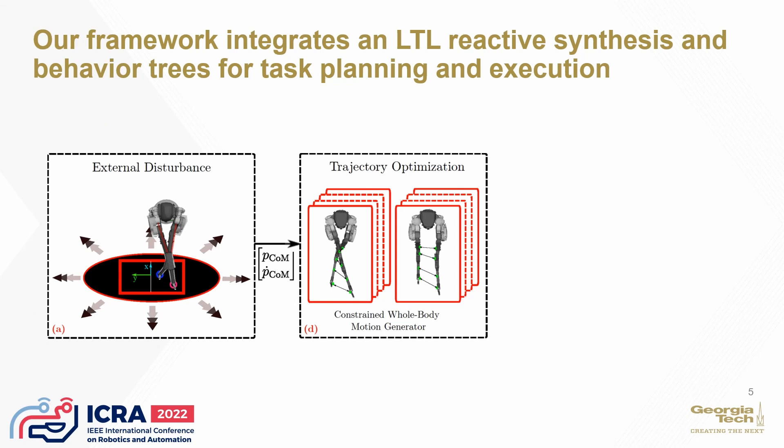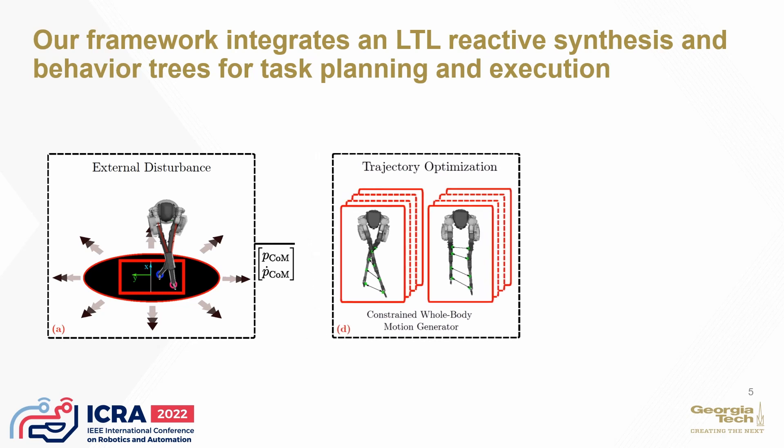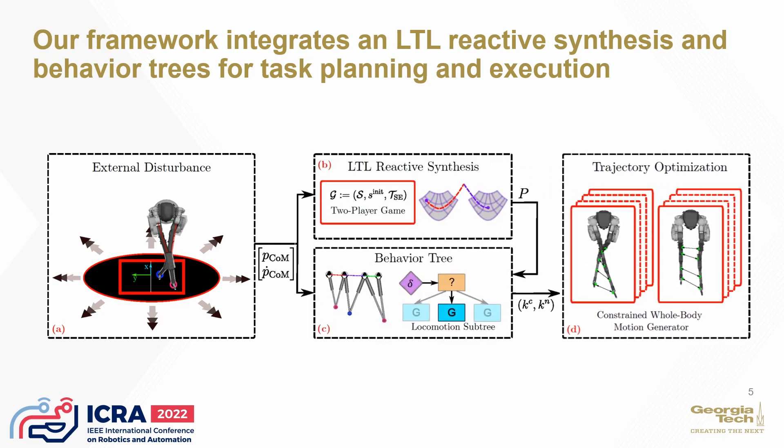Typical locomotion pipelines directly handle disturbances with motion planning and control. Our pipeline incorporates real-time task planning using linear temporal logic-based reactive synthesis. We use the dynamics at key points in the center of mass phase space to dictate state transitions. A robust behavior tree middle layer handles any discrepancies between the discrete task and the continuous motion planning level.